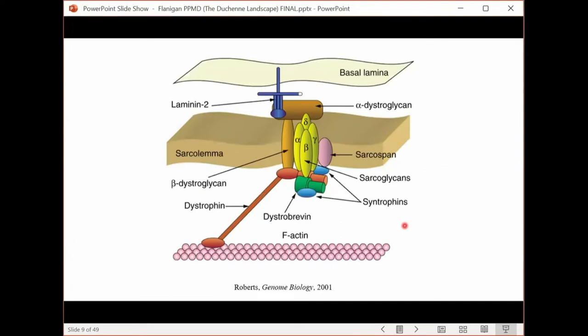A really simplified cartoon of this structure is shown here, showing binding at one end to actin, the other end to dystroglycan via a whole complex, and anchoring the muscle. So there's stabilization of force, and in the absence of dystrophin, there is none of this anchorage, and we know that muscle deteriorates and muscle degeneration occurs.